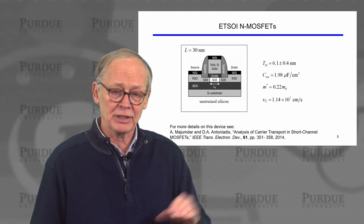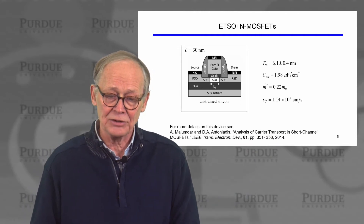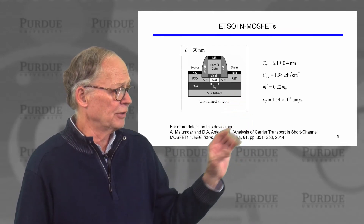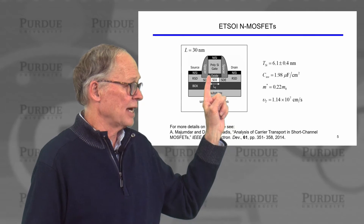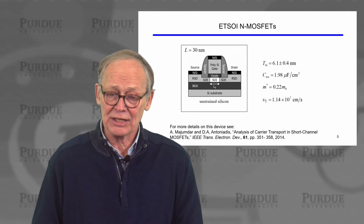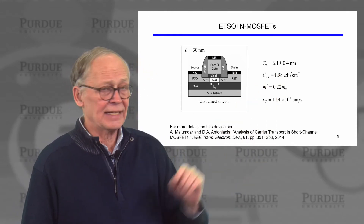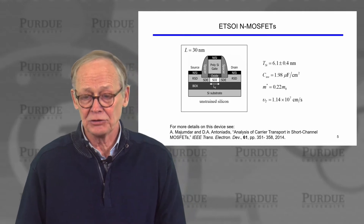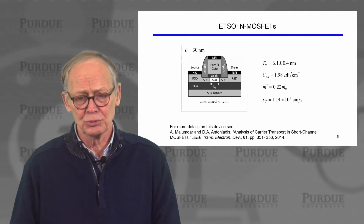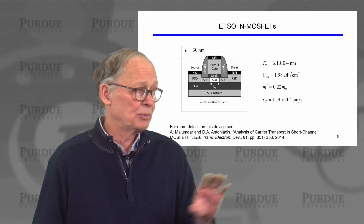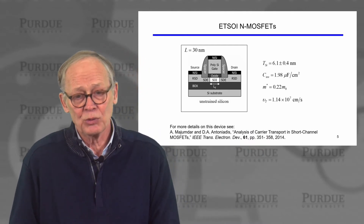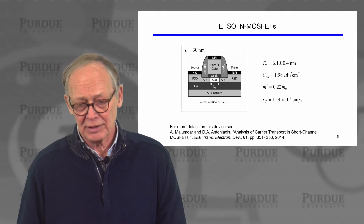We're going to look at a silicon MOSFET — an extremely thin SOI n-channel MOSFET described in a reference paper. The thin silicon channel is about 6.1 nanometers. The measured oxide gate capacitance is 1.98 microfarads per square centimeter. The appropriate effective mass is 0.22 times the electron rest mass. Using these numbers, we can compute the unidirectional thermal velocity: 1.14 times 10 to the 7th centimeters per second.